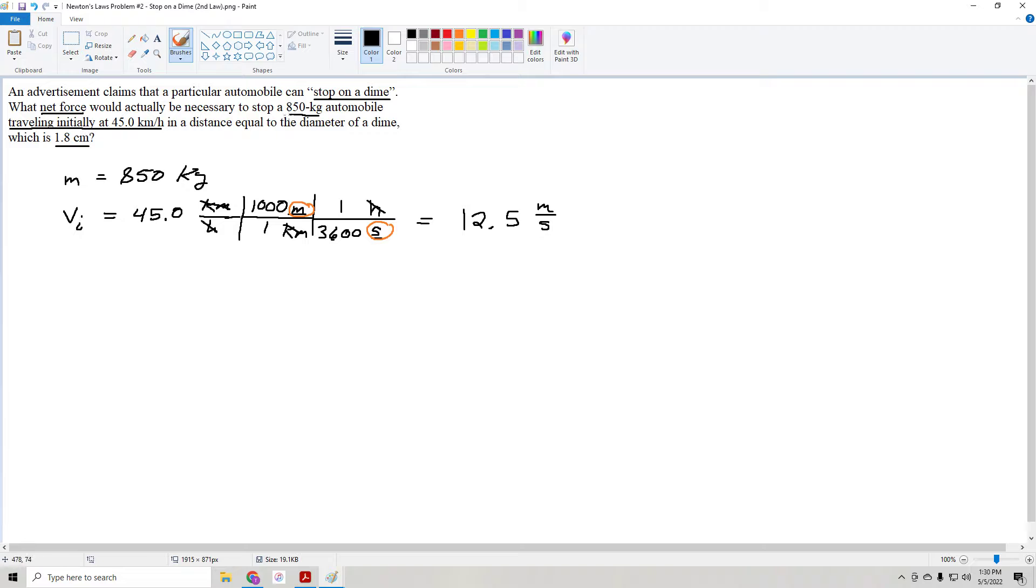We have 45.0 times 1,000 divided by 3,600, and our final units are meters per second. What do we get when we put this in the calculator? I get 12 and a half meters per second. So we have the appropriate units here, we can move forward. What's the next piece of information we were given? The diameter of the dime. Let's call that x, 1.8 centimeters. That's great to know, but we want meters, not centimeters.